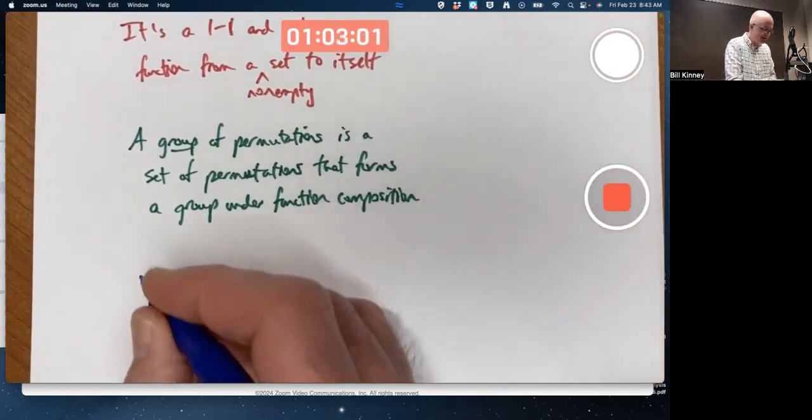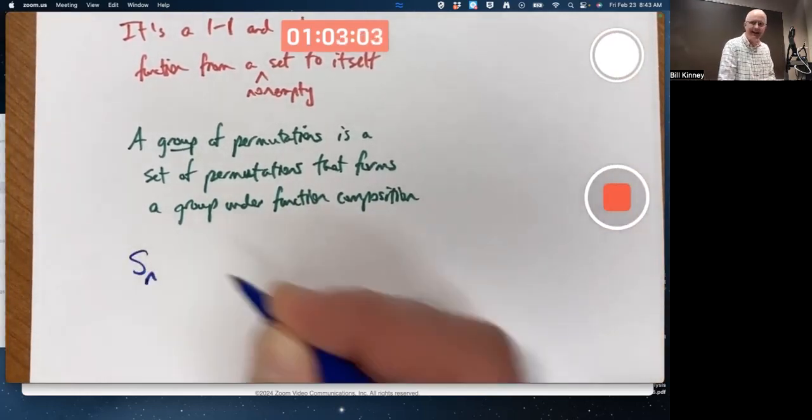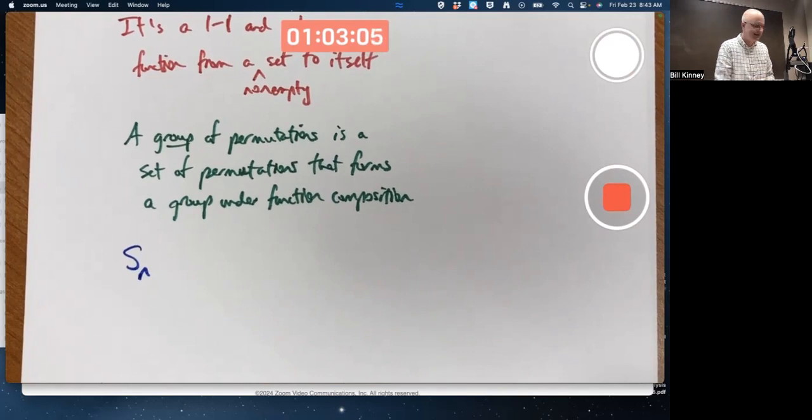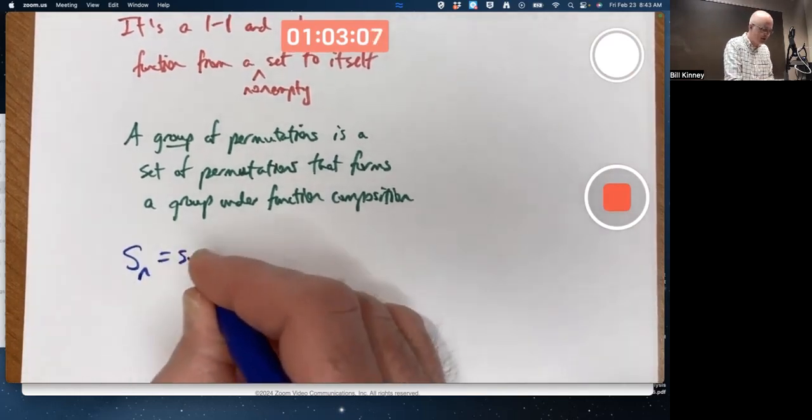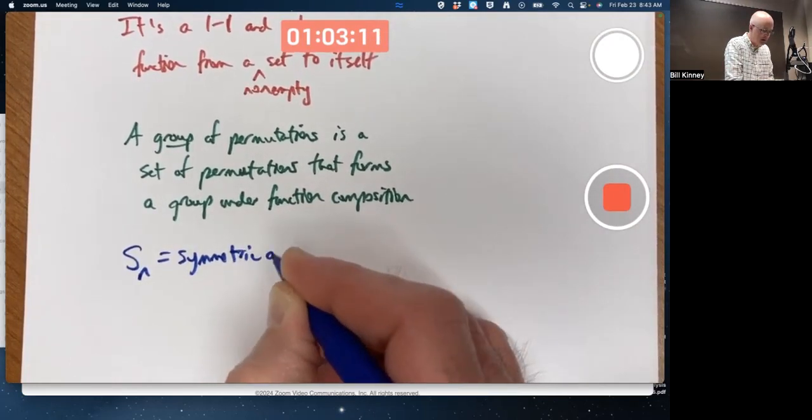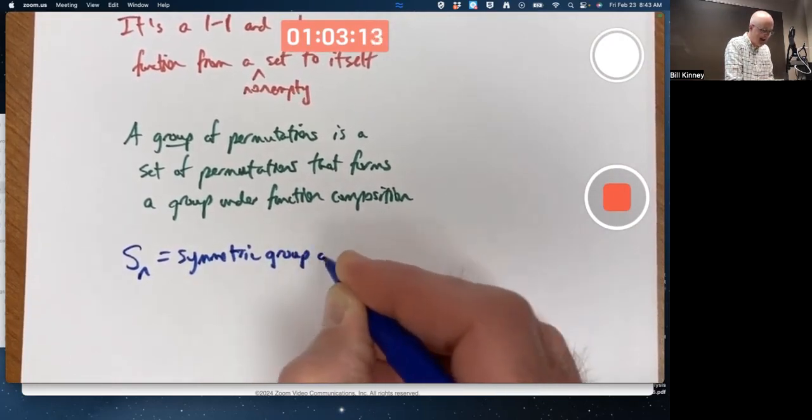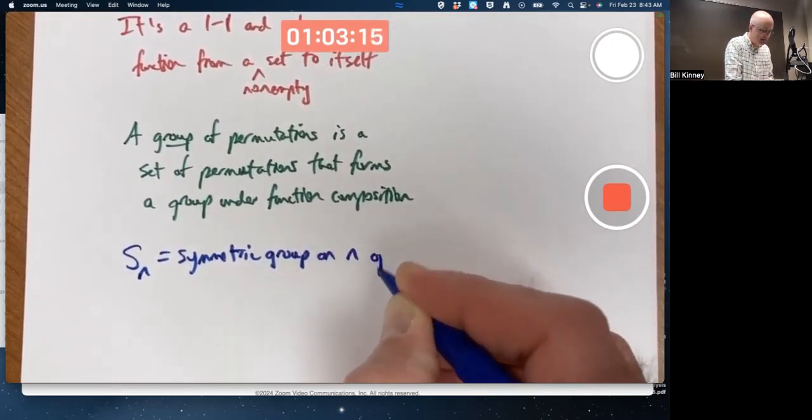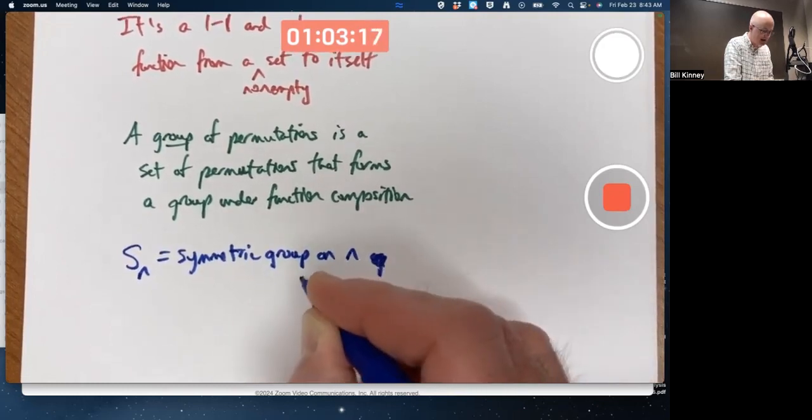Our main example is called S_N. It's called the symmetric group on N objects.